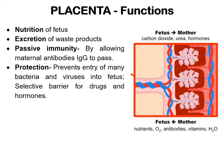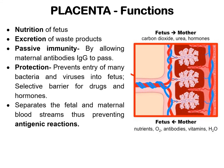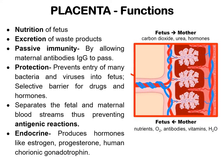It separates the maternal and fetal blood streams, thus preventing antigenic reactions. The placenta also performs an endocrine function as it secretes hormones like estrogen, progesterone, and human chorionic gonadotrophin (hCG).